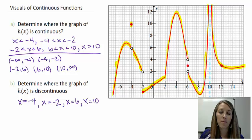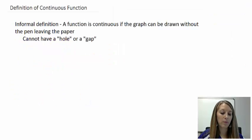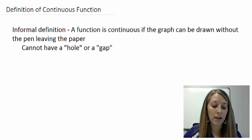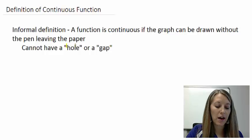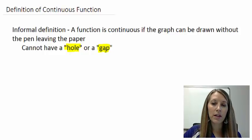We don't need to worry too much about the format — we just want to understand the idea. A function is discontinuous whenever you have to pick up your writing utensil, and continuous when you can keep tracing the graph without any breaks. Now, any time we have to pick up that writing utensil, it's most likely because we have a hole in the graph at that place, or a gap in the graph. Let's see some visuals of examples of holes and gaps.